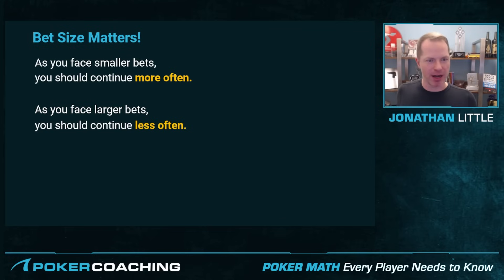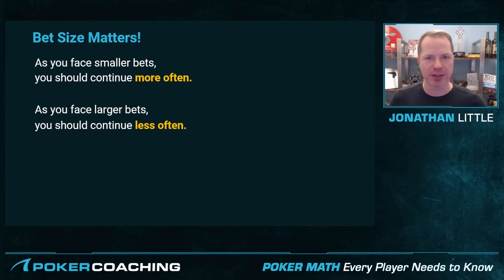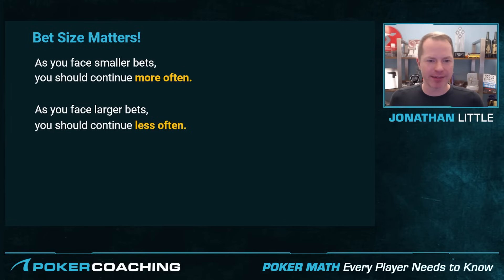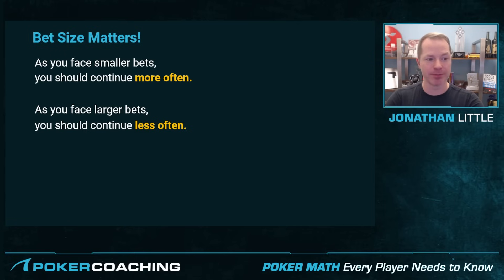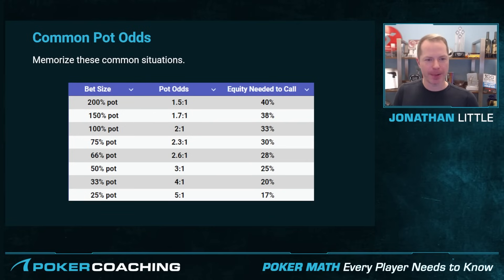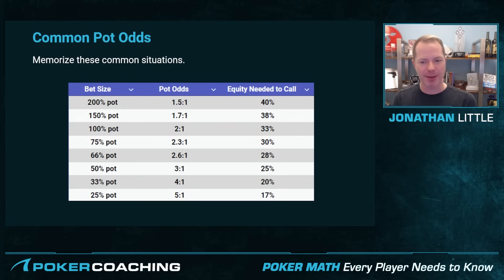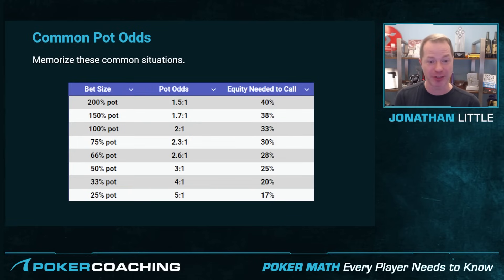A very important concept that comes from pot odds is that bet size matters a lot. As you face smaller and smaller bets, you should continue more and more often because you have to risk so little to win a lot. As you face larger bets, you should be continuing less often because you're risking a lot to win relatively little. Here's a chart listing common pot odds — I recommend you screenshot this and memorize it, because these situations are going to come up over and over again. You do not want to be sitting at the poker table doing the math on the fly. If you can just memorize this chart, it's going to make your life really easy.